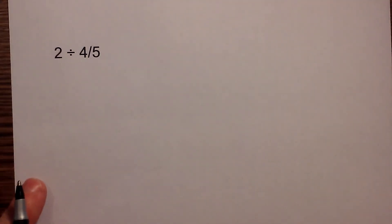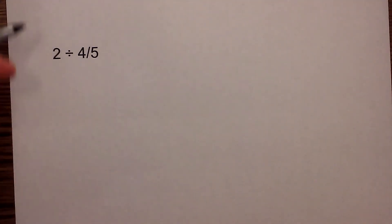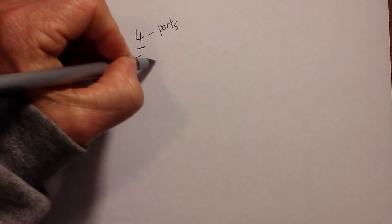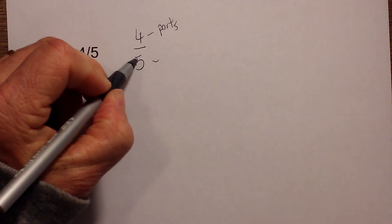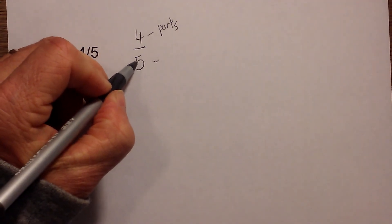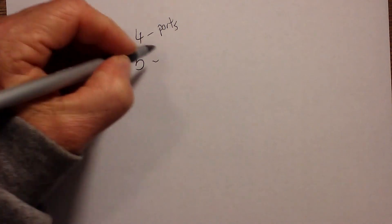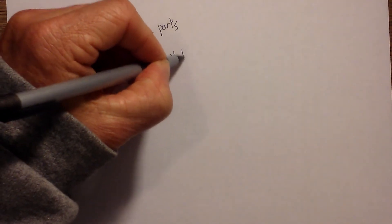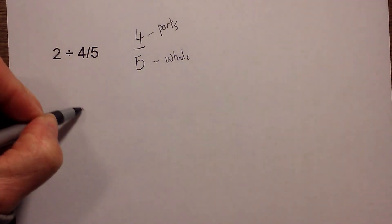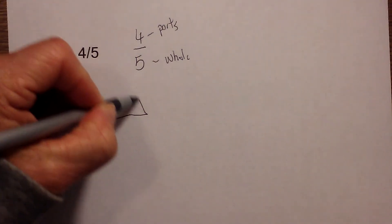So we have 2 divided by 4 fifths. The numerator tells me how many parts I am looking for, and the denominator tells me how many parts the whole block has been divided into. So this whole number will be the whole. I am going to draw 2 blocks again.